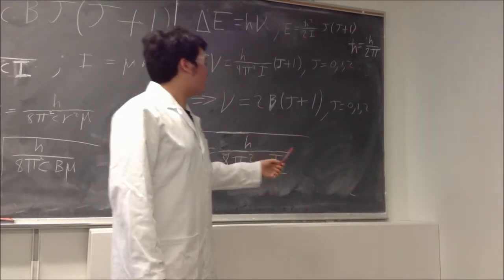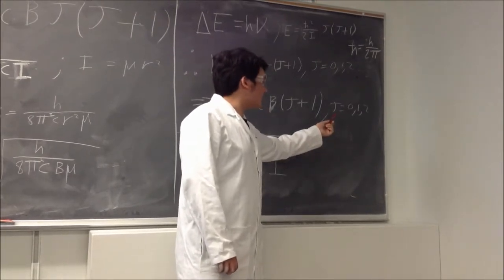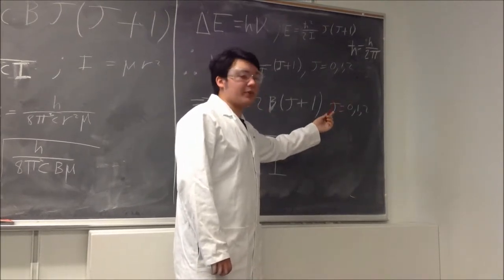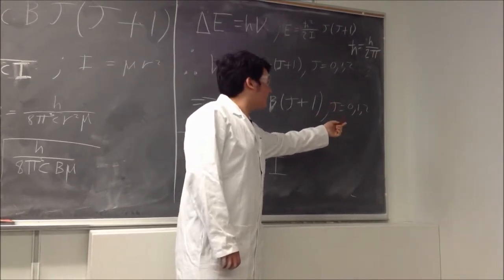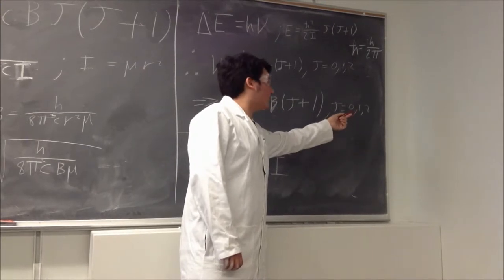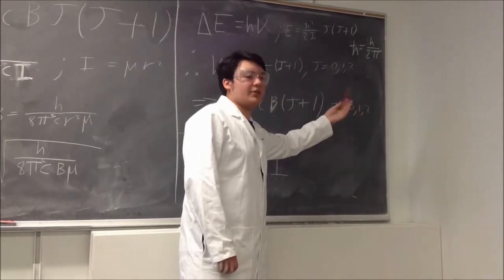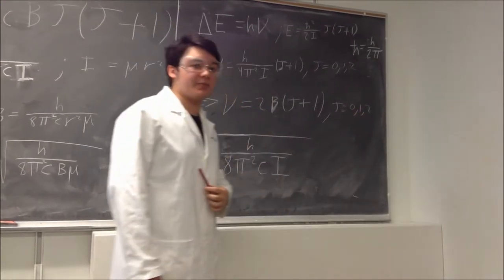Also note that J, the angular momentum quantum number, equals 0, 1, 2, 3, and so on as its possibilities.